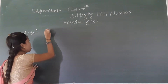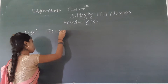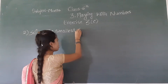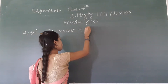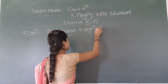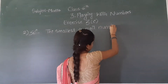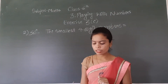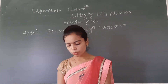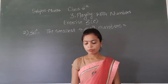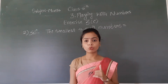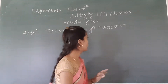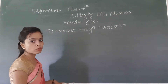What is the smallest four-digit number? Kaun sa number hota hai? Smallest four-digit number — 1, 0, 0, 0 — it means one thousand. Thousand is the smallest four-digit number.